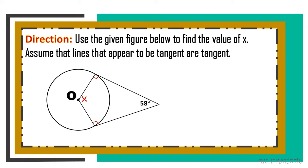Observing the illustration, we have a four-sided polygon. We all know that for any four-sided polygon, if we sum up the measures of all interior angles, we get 360 degrees. To find the measure of angle X, let us get the sum of the angles whose measures we already know: 58 degrees (given) plus two right angles from theorem 101 gives us 238 degrees.